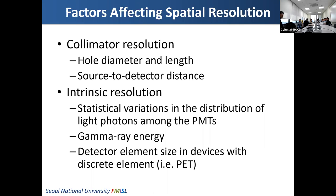How about intrinsic resolution? One of the main factors is the statistical variation in the distribution of light photons among the photomultiplier tubes. We use multiple photomultiplier tubes, but the gain of photomultiplier tubes are different, and the coupling between the photomultiplier tube and scintillation crystals is also different. The scintillation crystal itself is not homogeneous, so there is some random statistical variation in the distribution of light photons among the photomultiplier tubes.